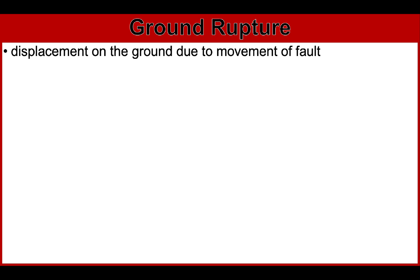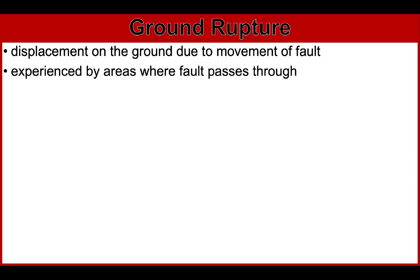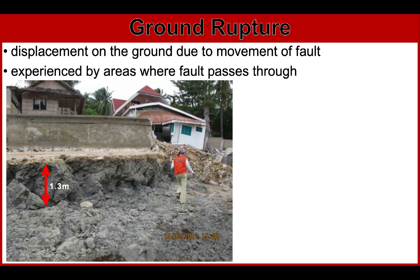Ground rupture will be experienced by areas where a fault passes through. Note that not all cracks on the ground seen after a strong earthquake are faults — some may just be superficial cracks due to ground failure. The movement may have vertical and horizontal components and may be as small as less than 0.5 meters, as in the Masbate 1994 earthquake, or as big as 6 meters, such as an approximately 1.3 to 2 meters uplift in Barangay Mackinley, Guihulngan City, Negros Occidental in February 2012, and the July 1990 rupture at Carangalan, Nueva Ecija.